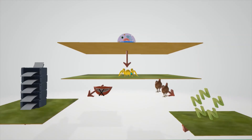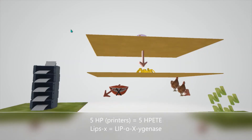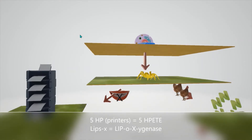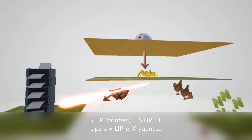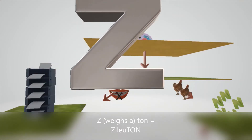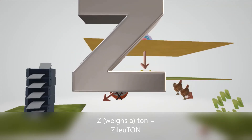After arachidonic acid is made, it can go to the leukotrienes. It's first converted to 5-HPETE — I like to remember '5-HP printers' for 5-HPETE. This conversion is through the enzyme 5-lipoxygenase, represented by lips with an X. Imagine the spider with acid being converted into 5-HP printers through 5-lipoxygenase. To remember that zileuton blocks this conversion, we have a Z that weighs a ton smashing the lips with the X — zileuton inhibits 5-lipoxygenase.